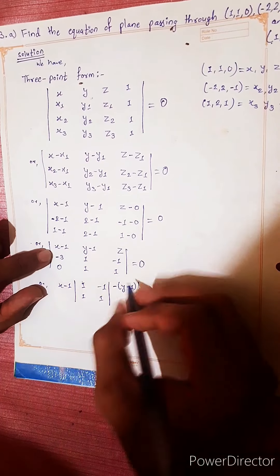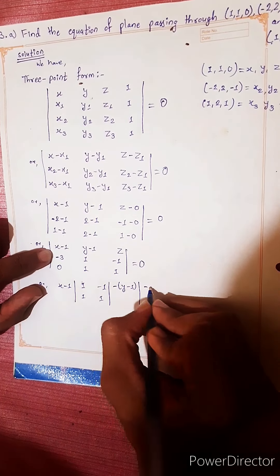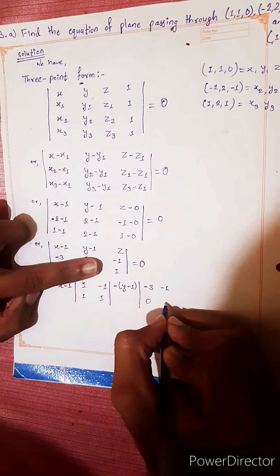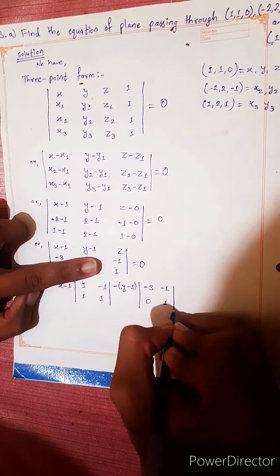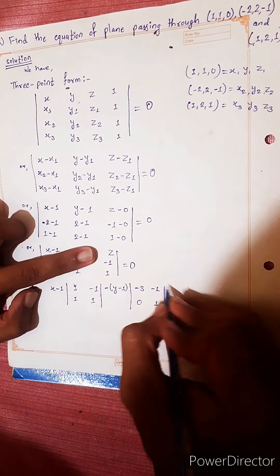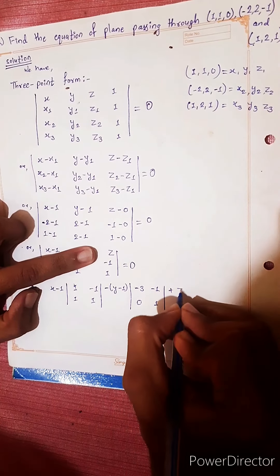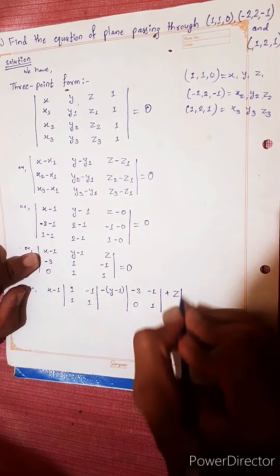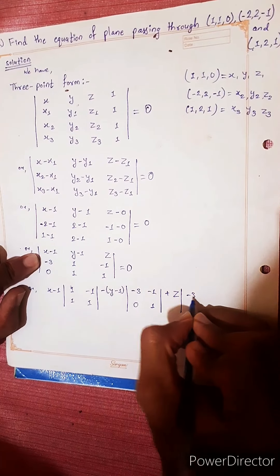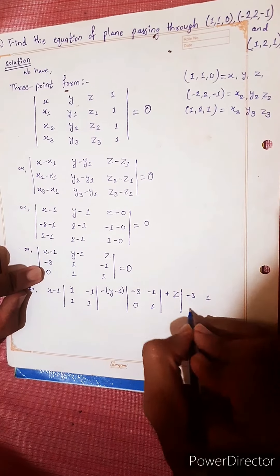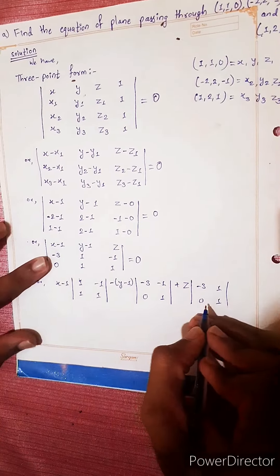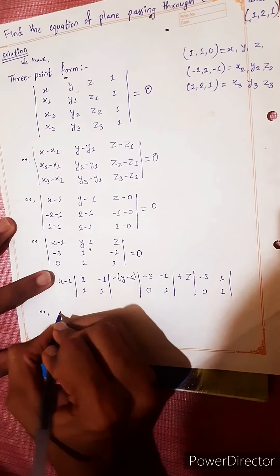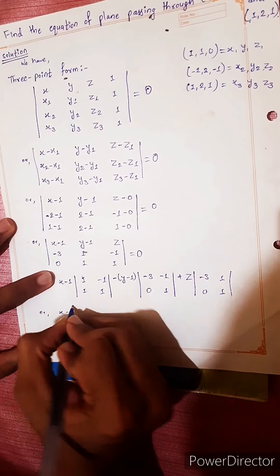Expanding the determinant along the first row: for (x-1), the cofactor uses elements minus 3, minus 1, 0, 1. For z, the cofactor column elements are minus 3, 1, 0, 1. Now for x minus 1.